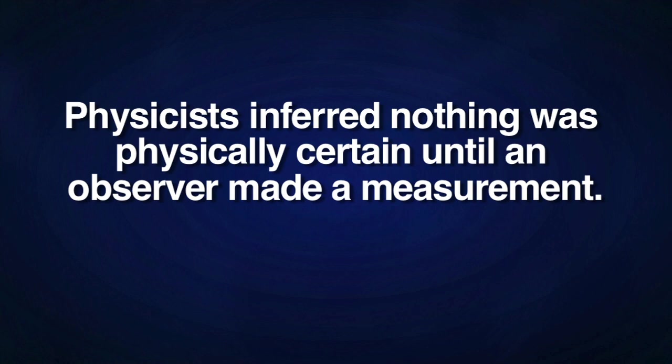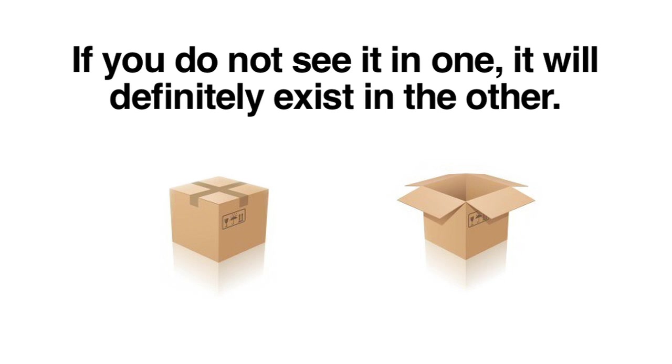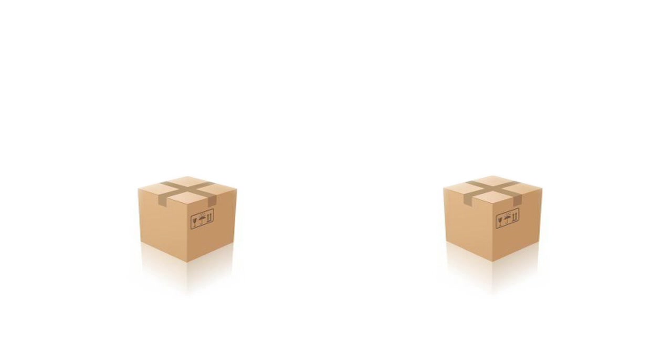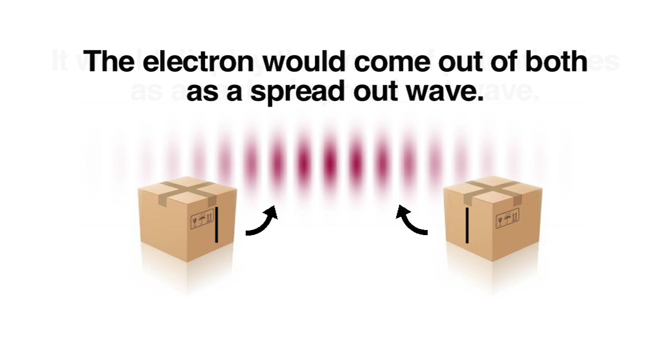To better explain this in The Quantum Enigma, Bruce Rosenblum and Fred Kuttner explain with a simple scenario representing what is actually happening. If we were to take an electron and isolate it in a superposition of two boxes and open one box, the electron would collapse in either one or the other. So if you don't see it in one, it will definitely exist in the other. However, if you were to take another pair of boxes and open them both simultaneously, the electron would come out of both as a spread out wave. It would display the wave of potentialities as an actual spread out wave, like what we saw with the double slit experiment when we do not place a measuring device to observe one slit.